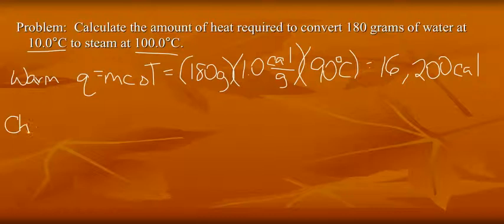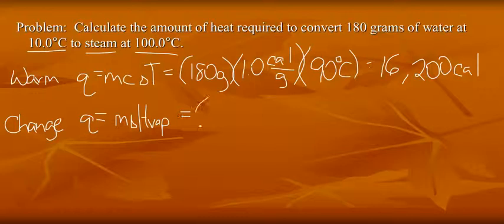Then we're going to change the state, because when we get to 100 degrees, we're still a liquid. I want steam at 100, so Q equals M delta H of vaporization. We'll change the state.